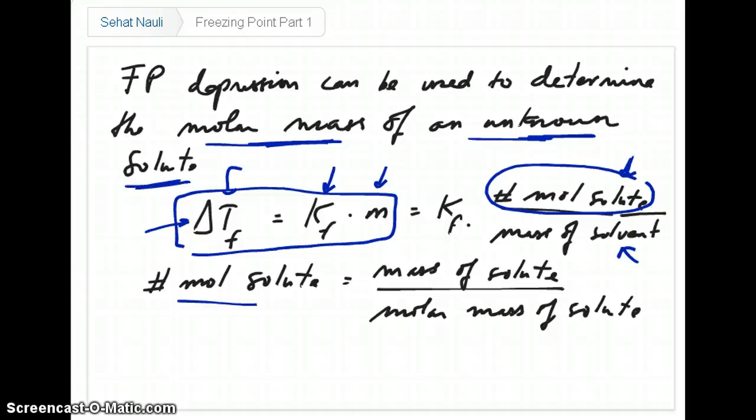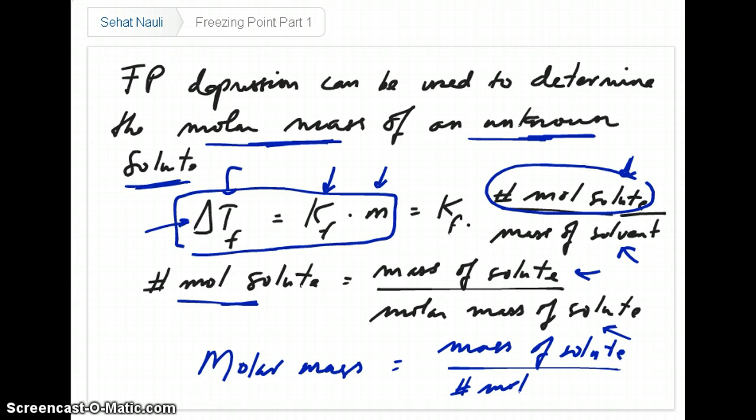Why is that useful? Well, number of moles is mass over molar mass. So I can rewrite this equation as molar mass equals to mass of solute, which is something you control - you know how much solute you put in - divided by its number of moles, which you can calculate based on the delta Tf equation. So if you know the number of moles of solute, then you should be able to calculate the molar mass, and that tells you the molar mass of your unknown that you just made.